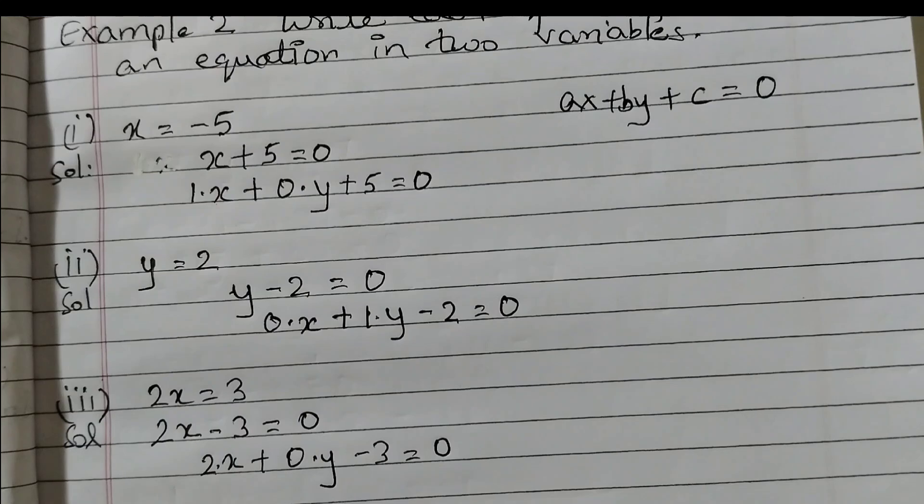The term which is missing you just need to make it 0. So 2 into x plus 0 into y minus 3 is equal to 0.